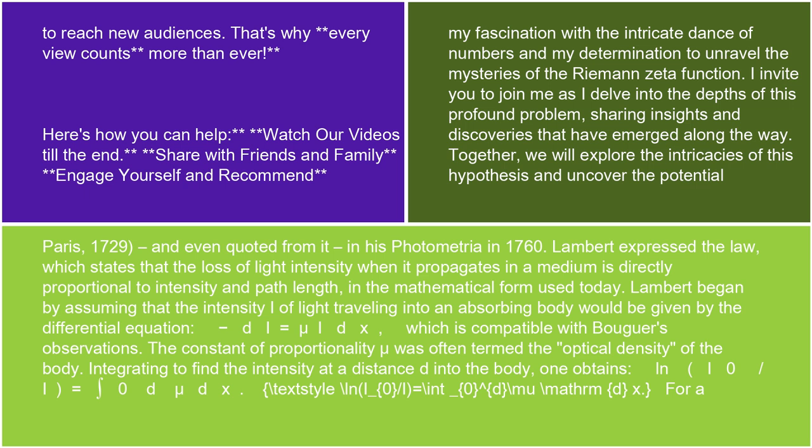and even quoted from it in his Photometria in 1760. Lambert expressed the law, which states that the loss of light intensity when it propagates in a medium is directly proportional to intensity and path length, in the mathematical form used today. Lambert began by assuming that the intensity of light traveling into an absorbing body would be given by the differential equation: −dI = μI dx, which is compatible with Bouguer's observations. The constant of proportionality μ is often termed the optical density of the body.